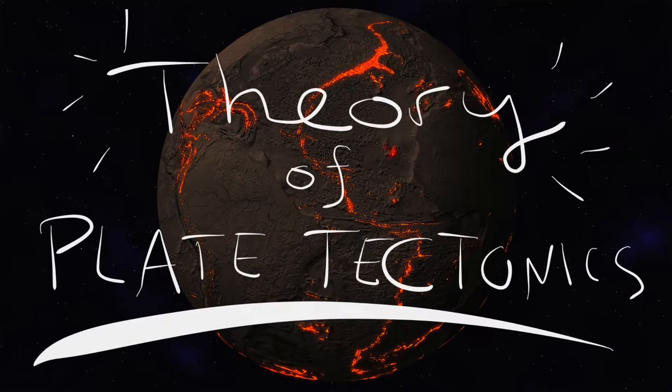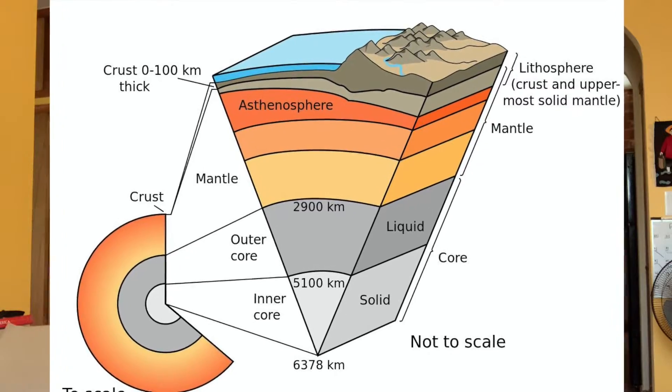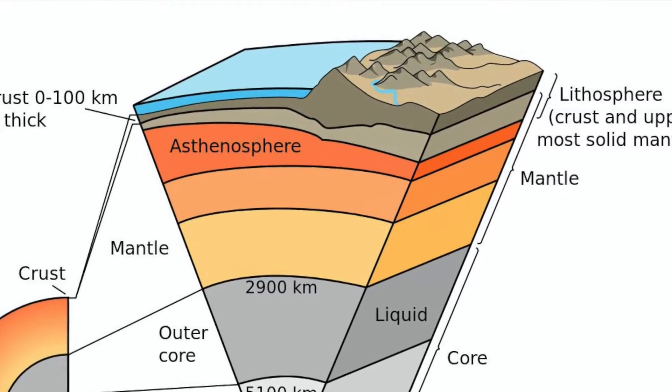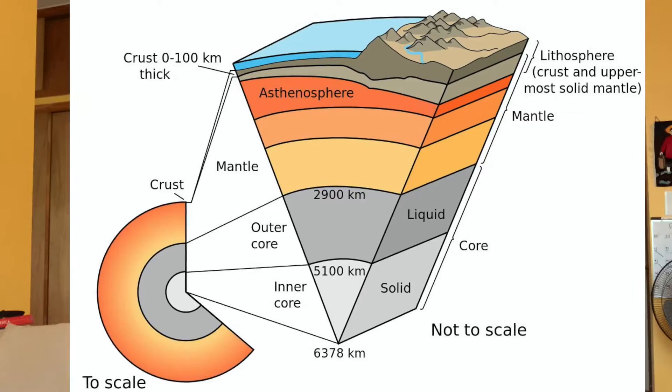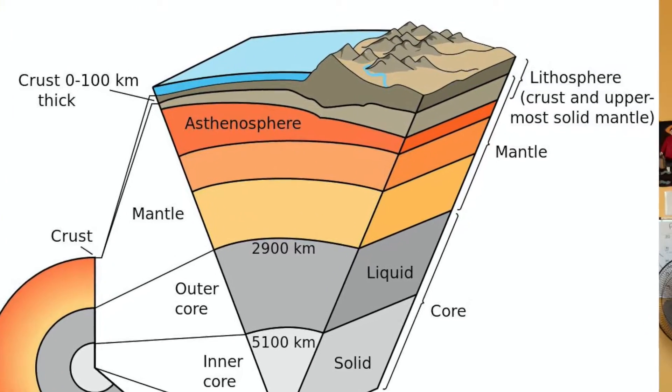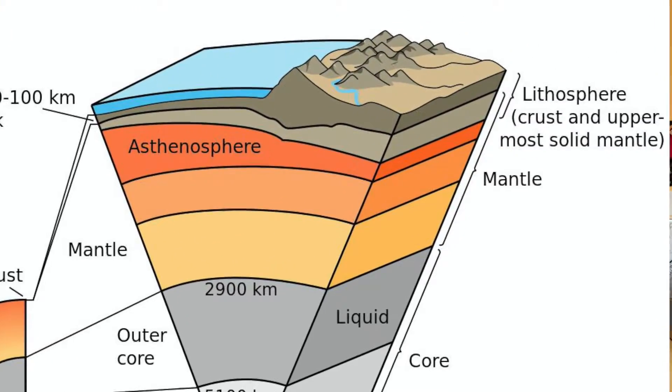In order to help you understand volcanic eruptions, I need to explain plate tectonics. The theory of plate tectonics says that the earth is made up of a bunch of different plates, and these plates are made out of the lithosphere — a brittle layer of rock broken up into different plates that are essentially floating on top of the uppermost part of the mantle, called the asthenosphere.